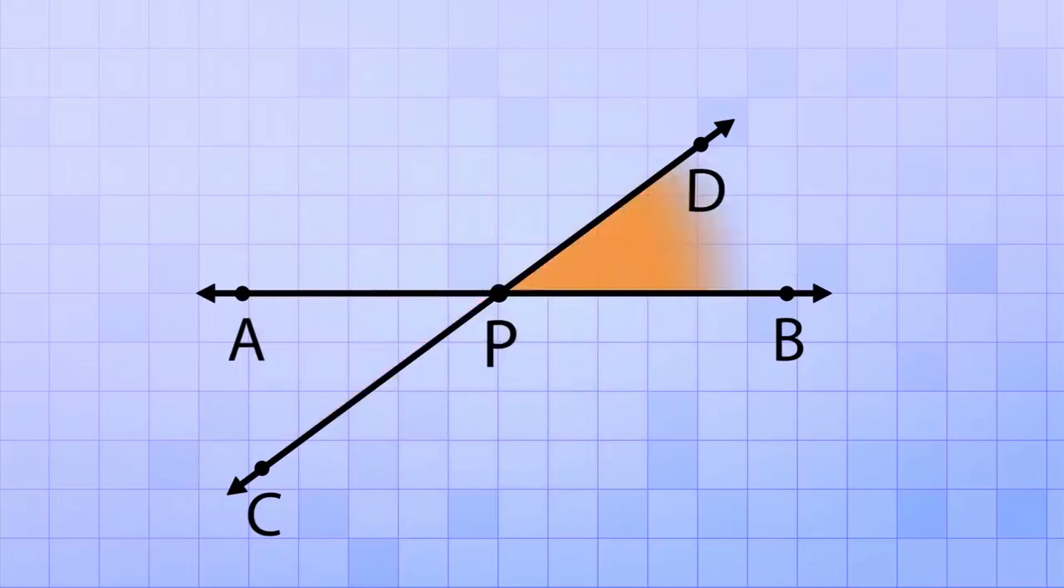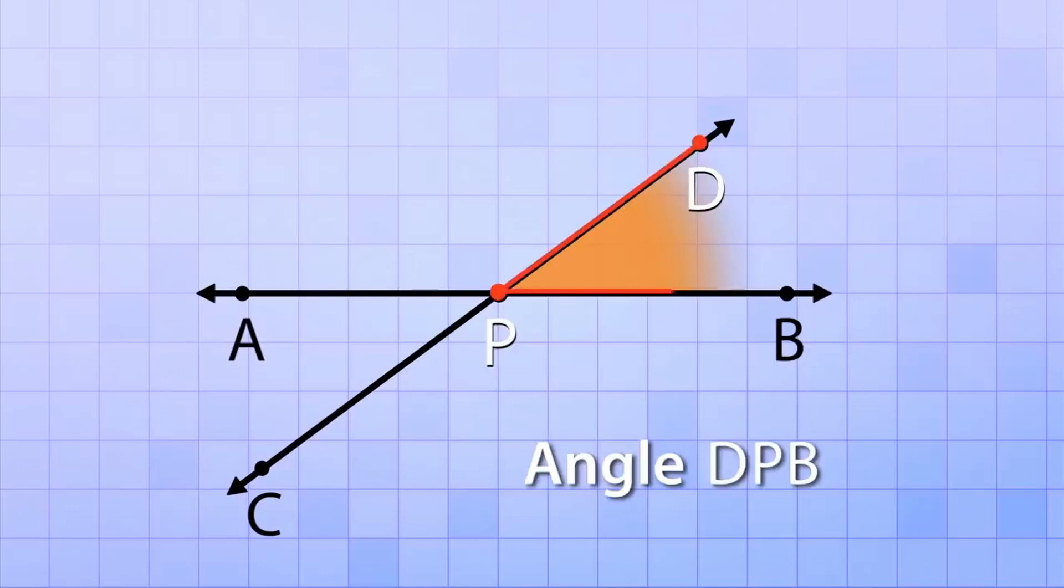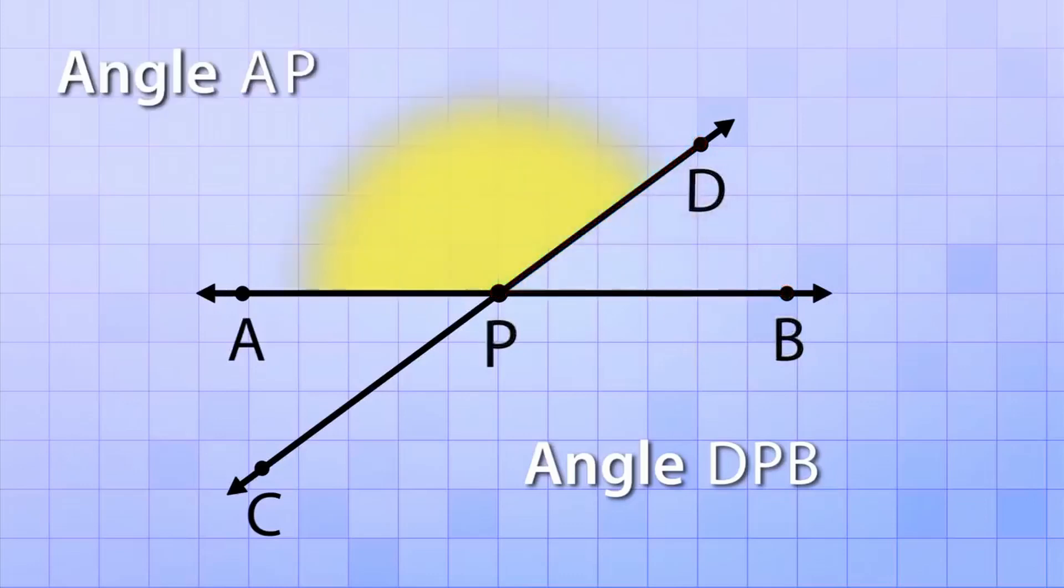For example, this angle here, we can call it angle DPB. Because if you connect those points, like connecting dots, they outline this angle. And this angle here, we can call it angle BPD. Because connecting those dots forms that angle.